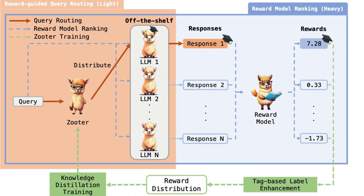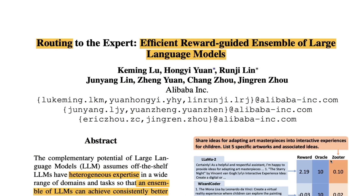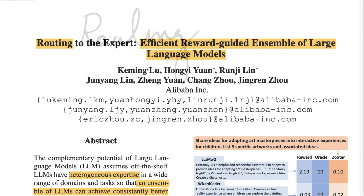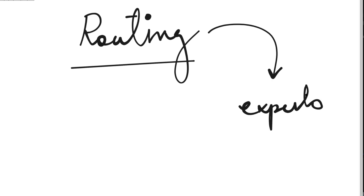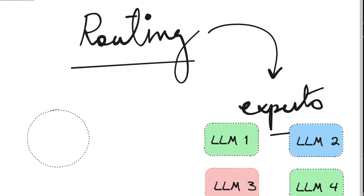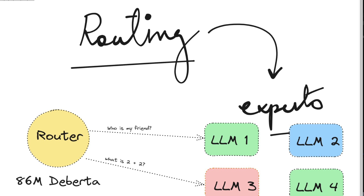This paper is going to offer some useful insight. It's called 'Routing to the Expert: Efficient Reward Guided Ensemble of Large Language Models.' We're going to have different experts and do it by efficient reward guided ensemble of large language models.